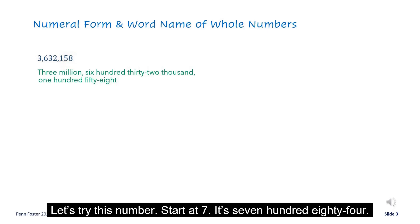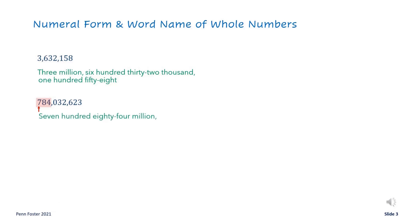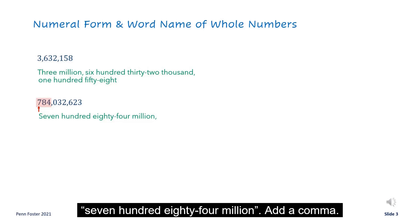Let's try this number. Start at seven — it's seven hundred eighty-four. Since this set is in the millions, add million to the name: seven hundred eighty-four million.